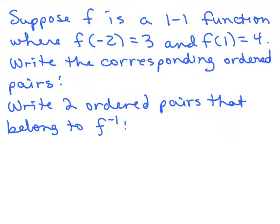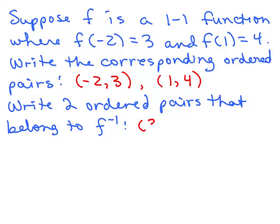Suppose f is a one-to-one function where f(−2) = 3 and f(1) = 4. There are more ordered pairs, but we know those two. Since f(x) = y, when we put in −2 we get 3, giving ordered pair (−2, 3), and the other is (1, 4). For f inverse, we simply exchange the x and y coordinates, giving (3, −2) and (4, 1).